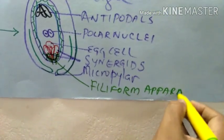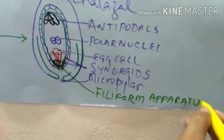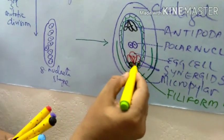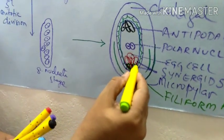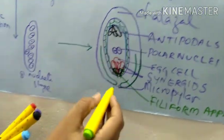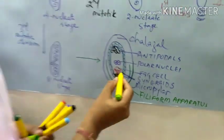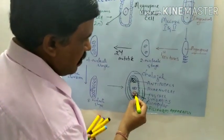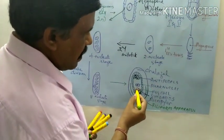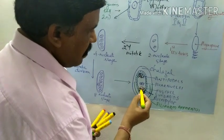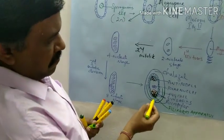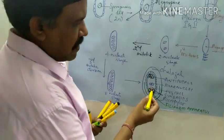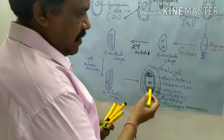The filiform apparatus — you find finger-like projections here. You find the micropyle, and synergids are found on both sides. There is a filiform apparatus with finger-like projections, and in the center we find the egg cell.